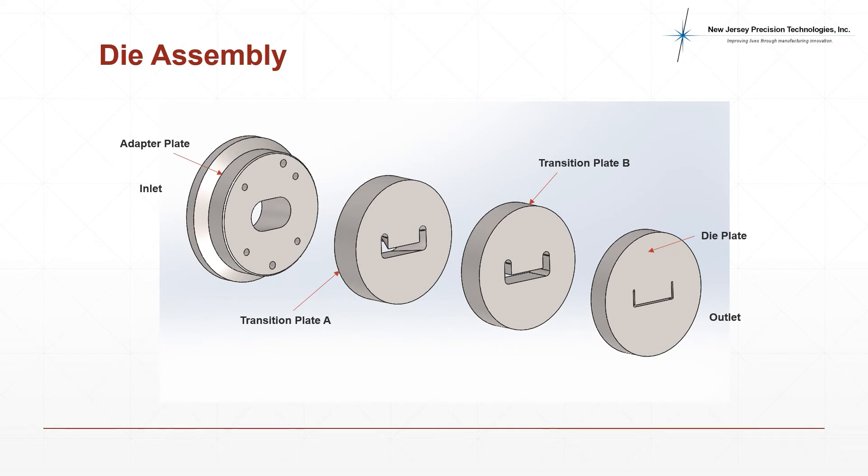Extrusion die assembly can have a single plate to unlimited plates depending on the application of the extruded product and material. Generally, the assembly consists of an adapter plate, single or multiple transition plates, and a die plate. The adapter plate lies closest to the extruder and the final extrudate with the desired geometry comes out of the die plate.